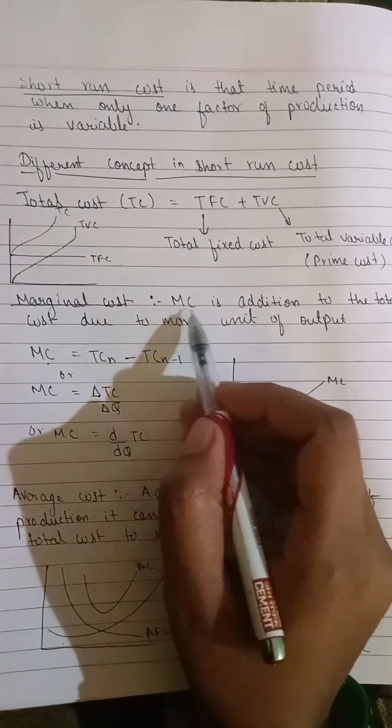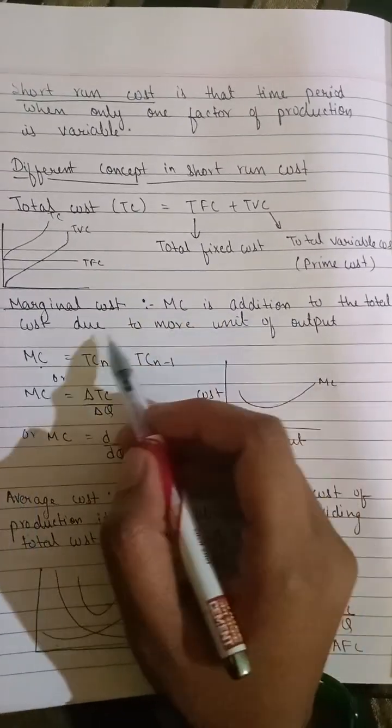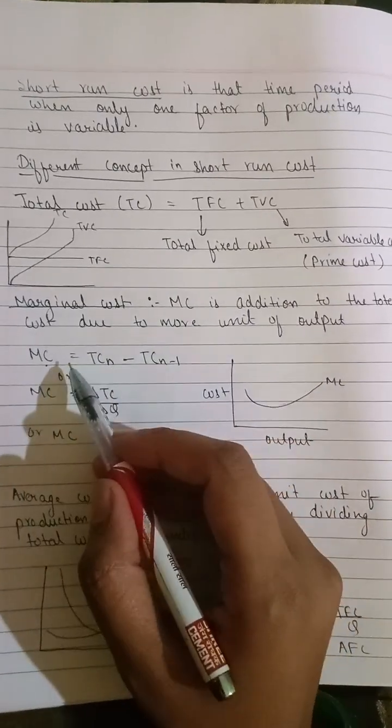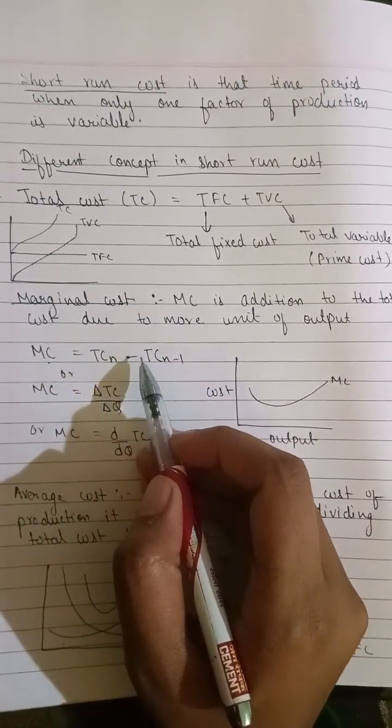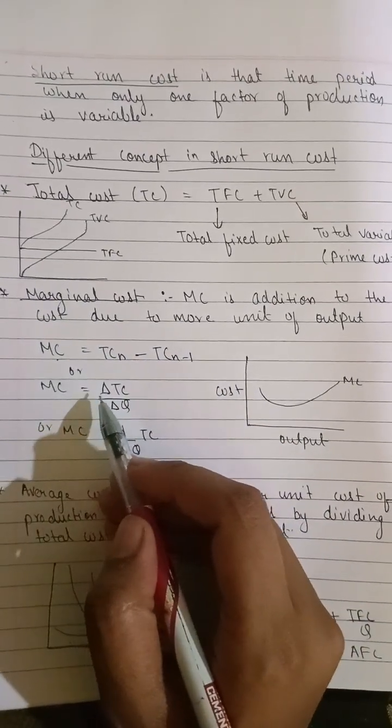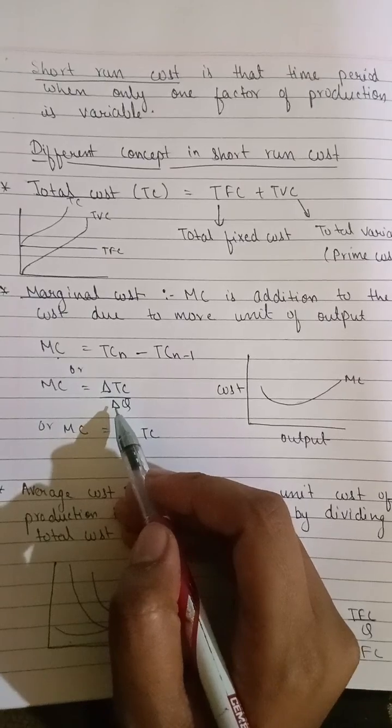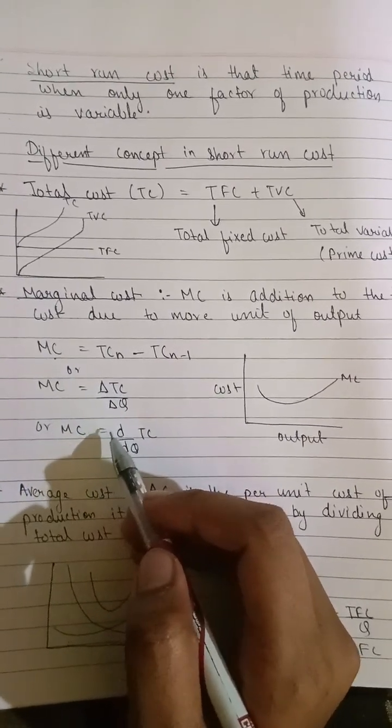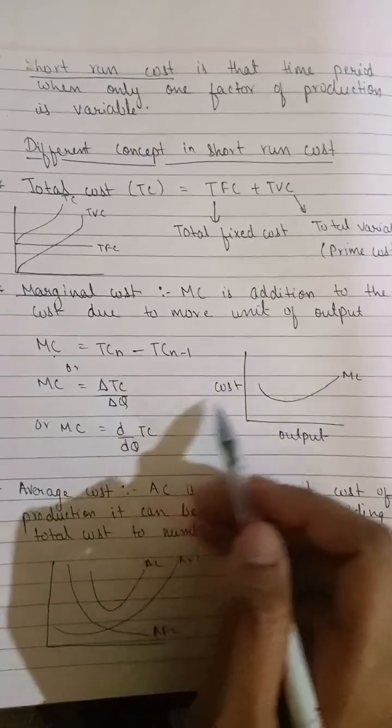Marginal cost is the addition to the total cost due to one more unit of output. MC = TC_n - TC_(n-1), or marginal cost = ΔTC/ΔQ, or marginal cost equals the differentiation of total cost.